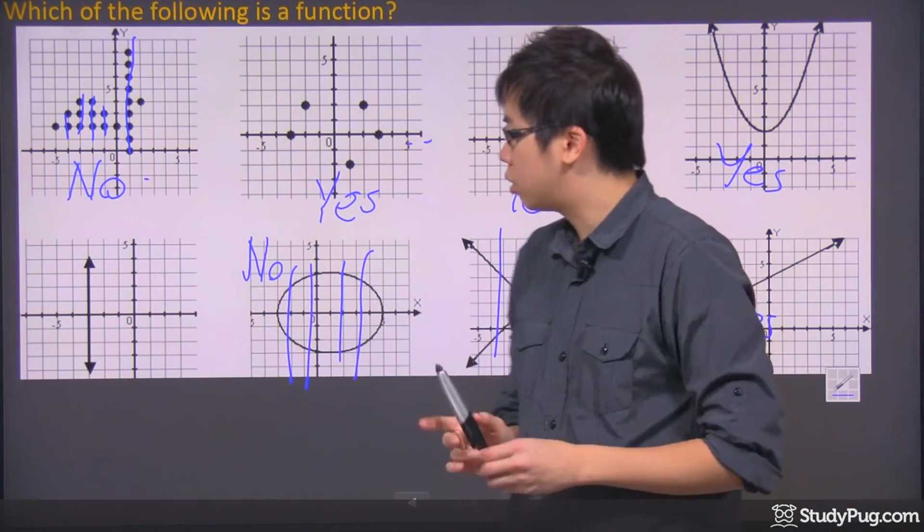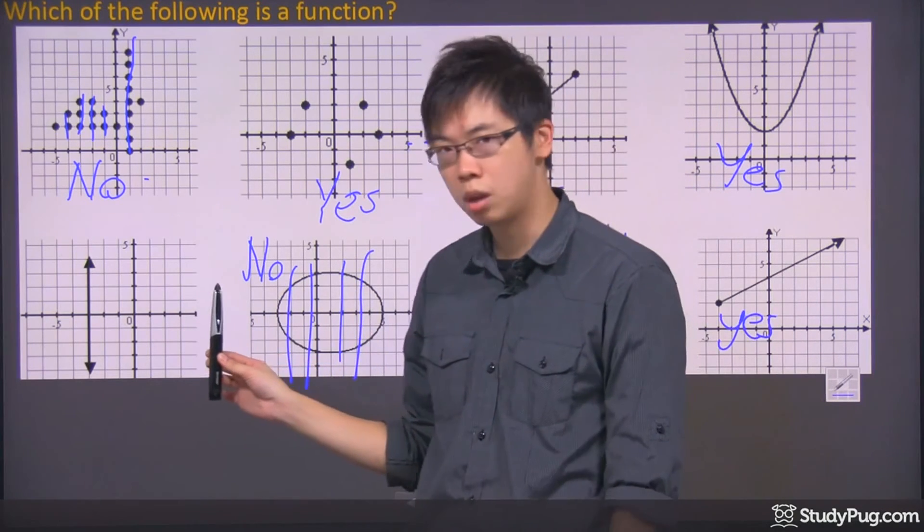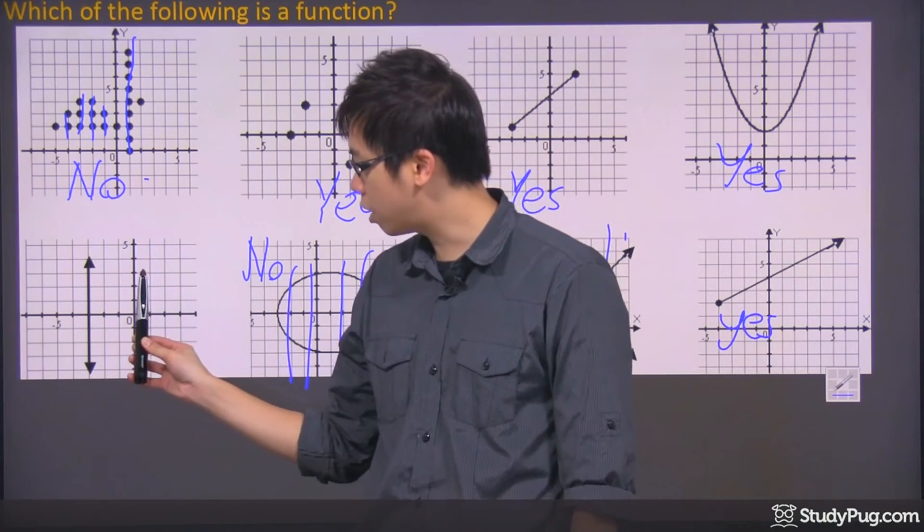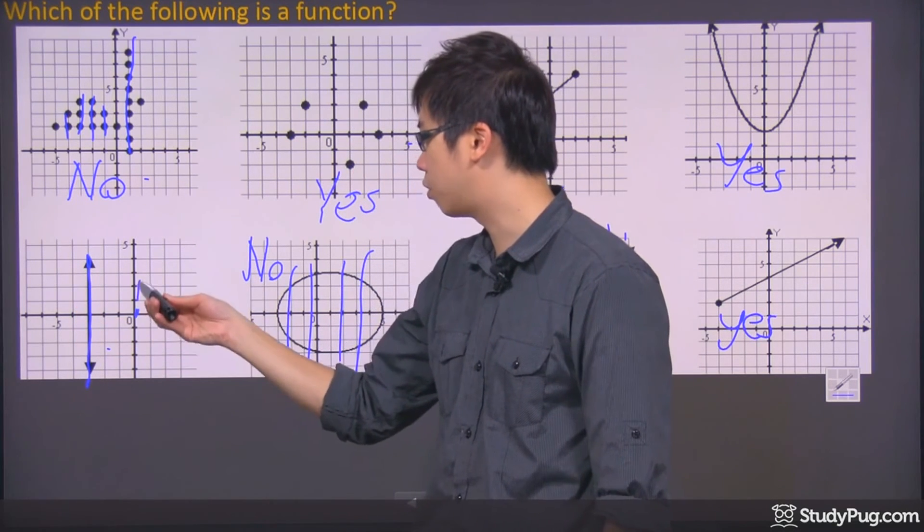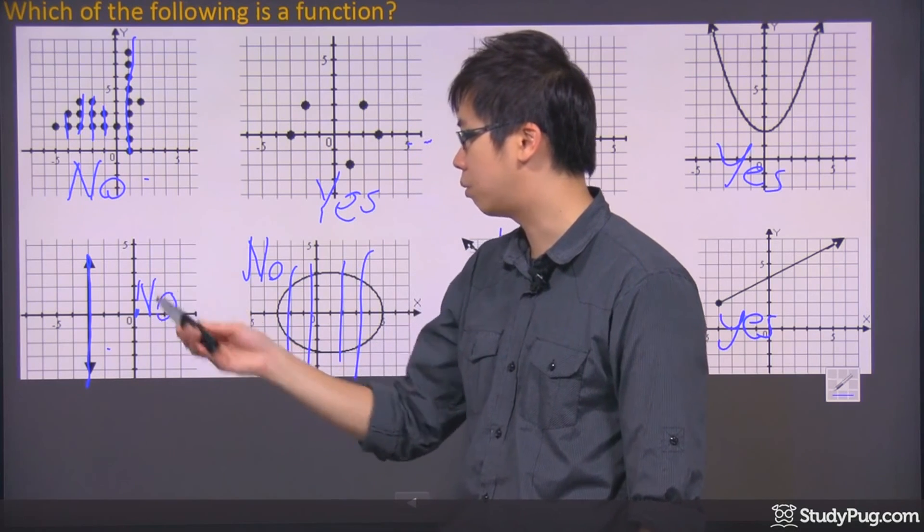What about this one? It looks quite weird. But hey, same rule applies, right? Vertical line test. You're touching a lot of the points at the same time. So unfortunately, that's a big no-no right there.